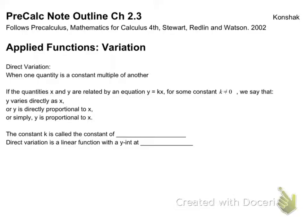Direct variation is just when one quantity is a constant multiple of another. If the quantities x and y are related by the equation y equals kx, that's direct variation, for some constant k that does not equal zero. There's three different ways that they say this: y varies directly as x, y is directly proportional to x, or y is proportional to x. Those are the three different ways the book is going to recognize this.